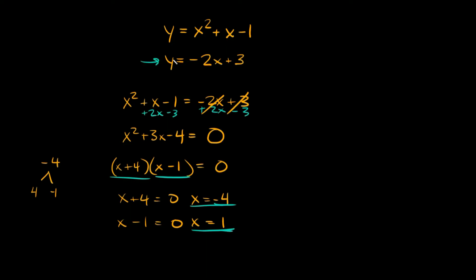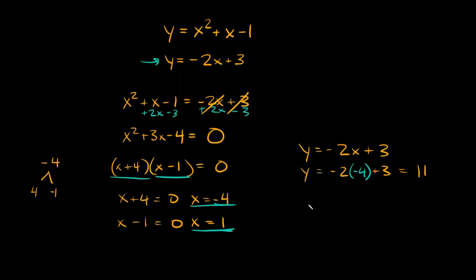To find y, we plug these back into one of the original equations. I'm going to pick y equals negative 2x plus 3 because it's easier to work with. Plugging in x equals negative 4: y equals negative 2 times negative 4 plus 3, which is 8 plus 3 equals 11. For x equals 1: y equals negative 2 times 1 plus 3, which is negative 2 plus 3 equals positive 1.